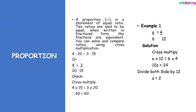You can solve and compare ratios using cross multiplication. For example, 4 ratio 20 is proportional to 3 ratio 15. Written as fractions: 4 over 20 equals 3 over 15. We can verify by cross multiplying: 4 multiplied by 15 equals 3 multiplied by 20, giving us 60 equals 60.